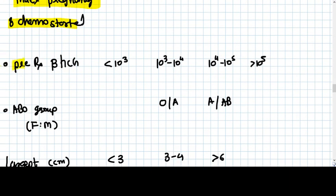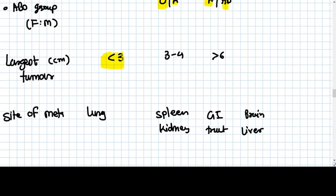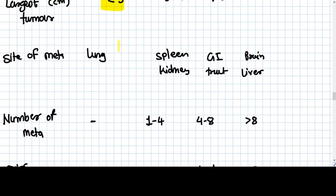Pre-treatment beta-HCG: if the beta-HCG is in thousands like 10 to the 3, then it's a low risk. But if it is in lacs, 10 to the 5, it is very high risk. The ABO group system is also associated with choriocarcinoma: for female O and A, for male A and AB are the high risk cases. Largest tumor in centimeter: if less than 3 centimeter then is good, more than 6 centimeter is high risk.